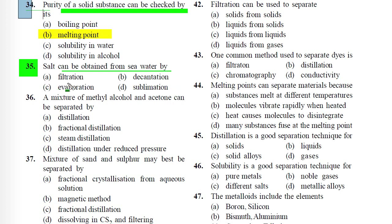Question 35: Salt can be obtained from sea water by: A) Filtration, B) Decantation, C) Evaporation, D) Sublimation. Correct answer is C) Evaporation. Sea water is a solution of salt and water; during evaporation, water gets evaporated off and salt is left as residue.